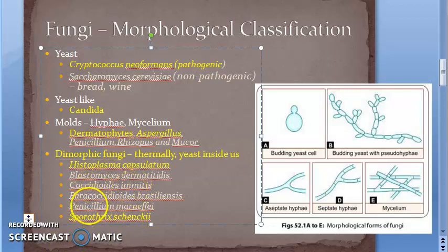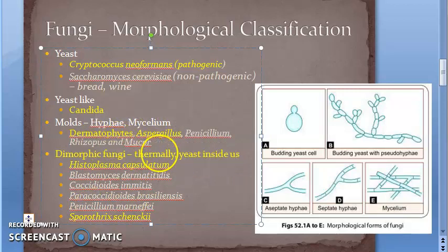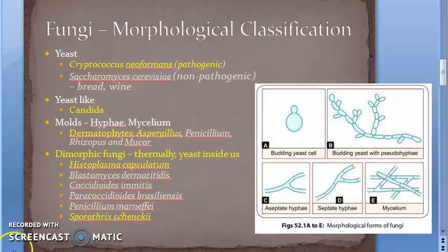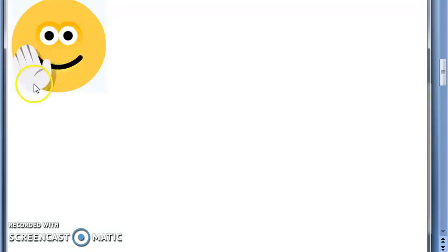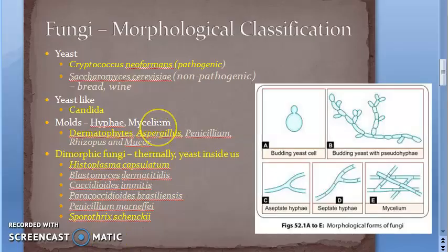Notice that Penicillium appears both as a mold and as a dimorphic fungus - this is because it depends on the exact species. So Penicillium can be either a mold or dimorphic. To summarize what we covered: classification into yeast, yeast-like (Candida), molds (e.g., dermatophytes), and dimorphic fungi (e.g., Histoplasma capsulatum).